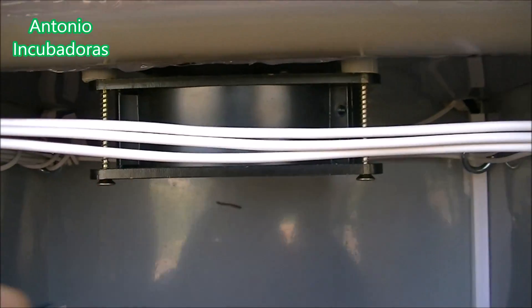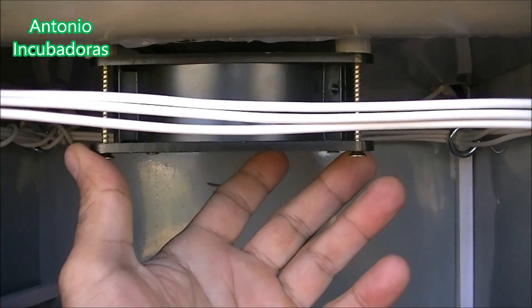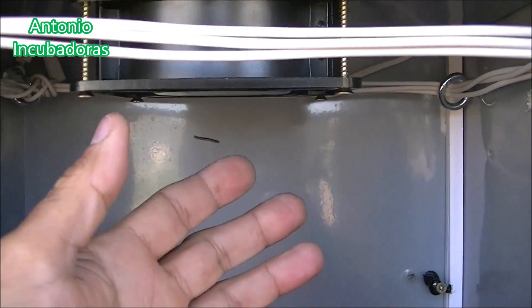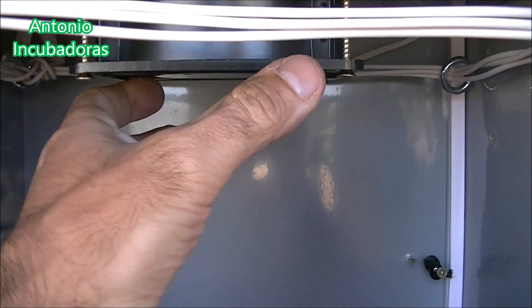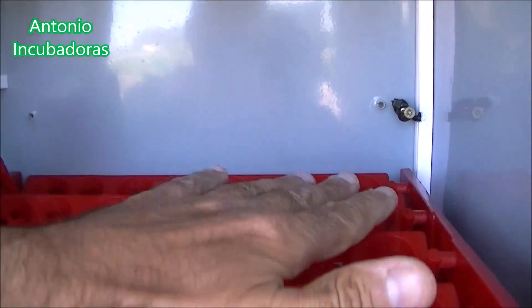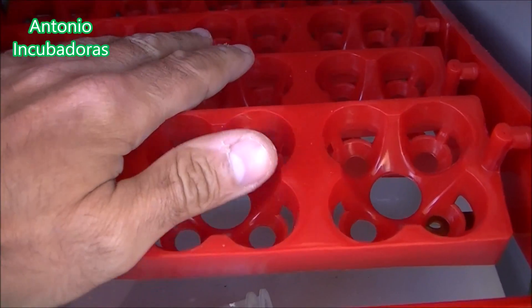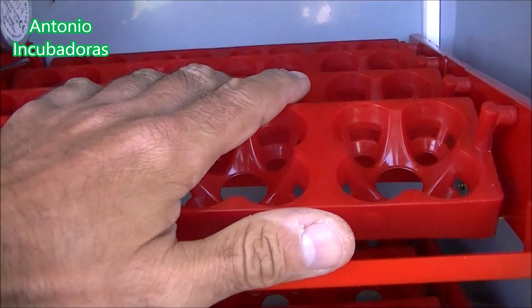Ahora bien, por otra parte, si tenemos un ventilador poco potente, que no mueva mucho aire, tenemos que aprovechar ese movimiento de aire que tiene, ese poco, hay que aprovecharlo al máximo. ¿Cómo? Dirigiendo ese torrente hacia abajo. No resecará los huevos de arriba, no los perjudicará, y hará que el aire caliente llegue con suficiente fuerza para que aquí haya la misma temperatura o parecida que en la bandeja de arriba.